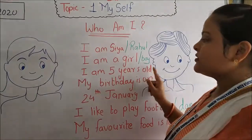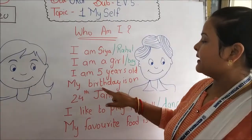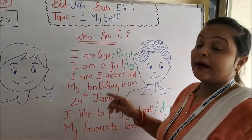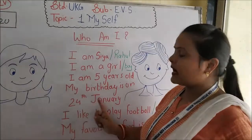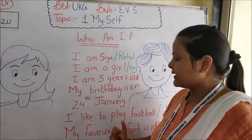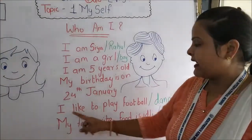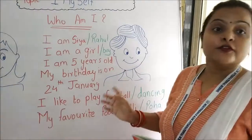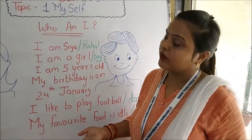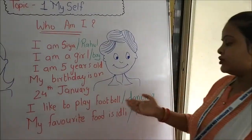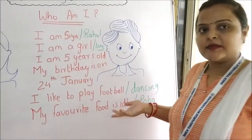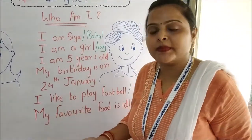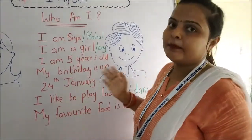I am four years old. My birthday is on 24th January. Aapka birthday kab hai? Aapko aapka birthday dihaan par likhna hai. I like to play football — agar aapko football pasand hai tho football likho. I like to play dancing — agar aapko dancing pasand hai tho dancing likho. Ya phir agar aapko koi aur cheez pasand hai tho aap likh sakte hain.